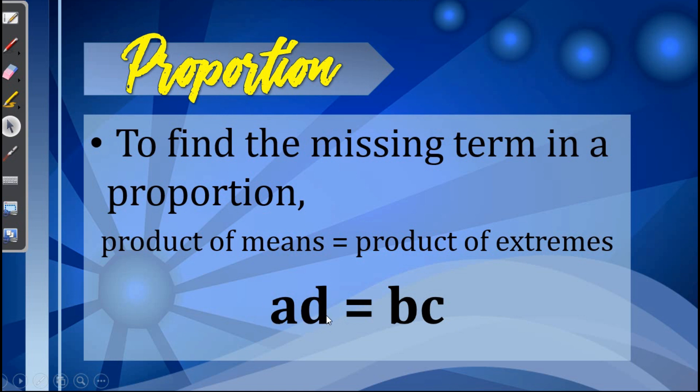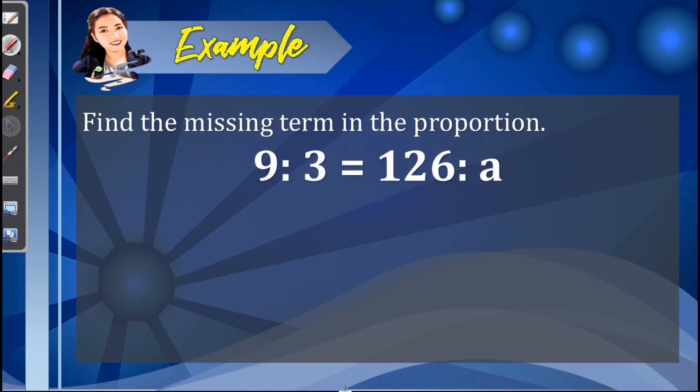First example: find the missing term in the proportion 9 is to 3 equals 126 is to a. So here, based on our discussion, we have to equate the product of the means with the product of the extremes.